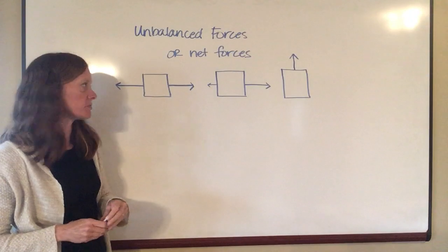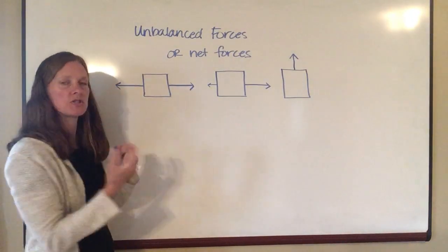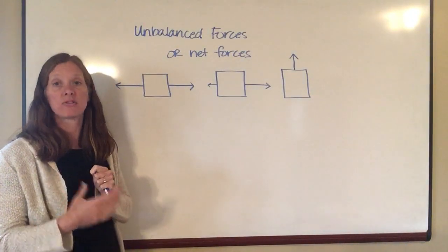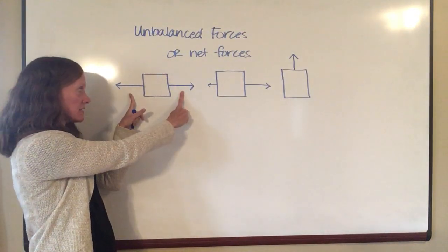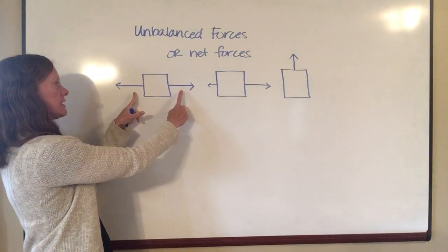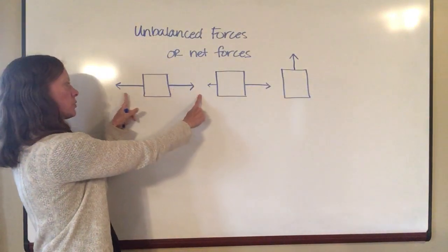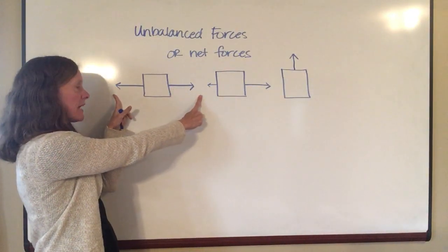Now when we draw these diagrams, the size of the arrow is supposed to help indicate the size of the force. So these two arrows are supposed to be the same size. And so what that means is that there's a force this direction, a force this direction. They're both the same magnitude.